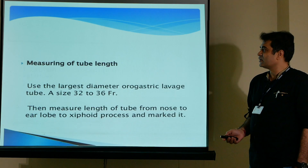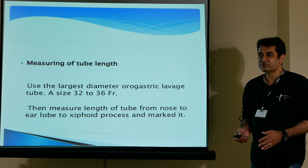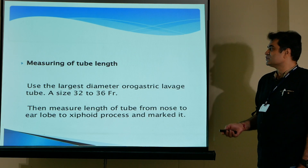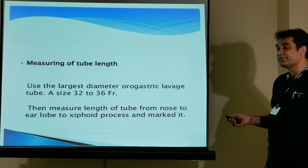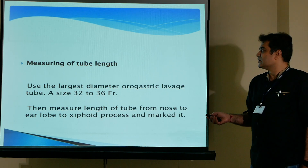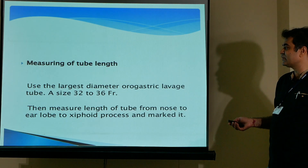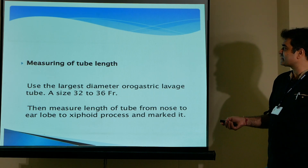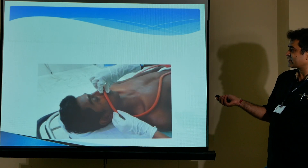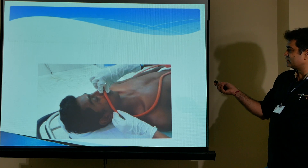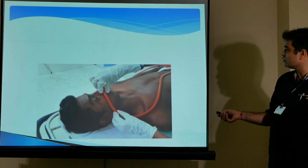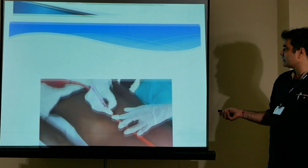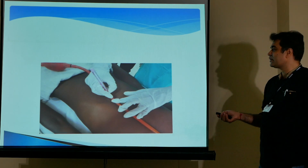For measuring tube length, use the largest diameter orogastric lavage tube depending on the age and size of the patient; a size 32 to 36 French catheter can be used. Measure the tube length from the nose to the ear lobe to the xiphoid process and mark it. This is the estimation of how far to insert the tube.